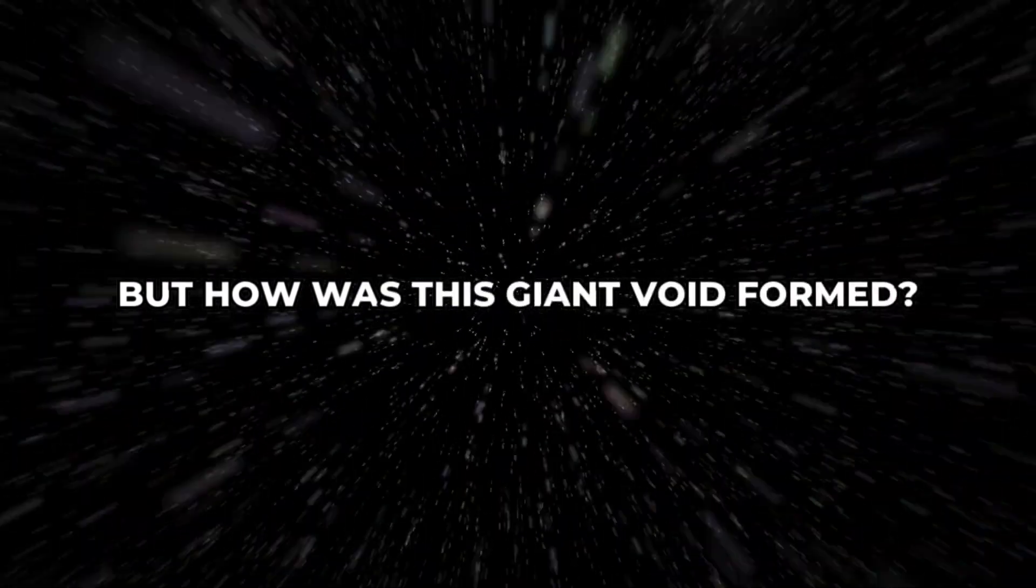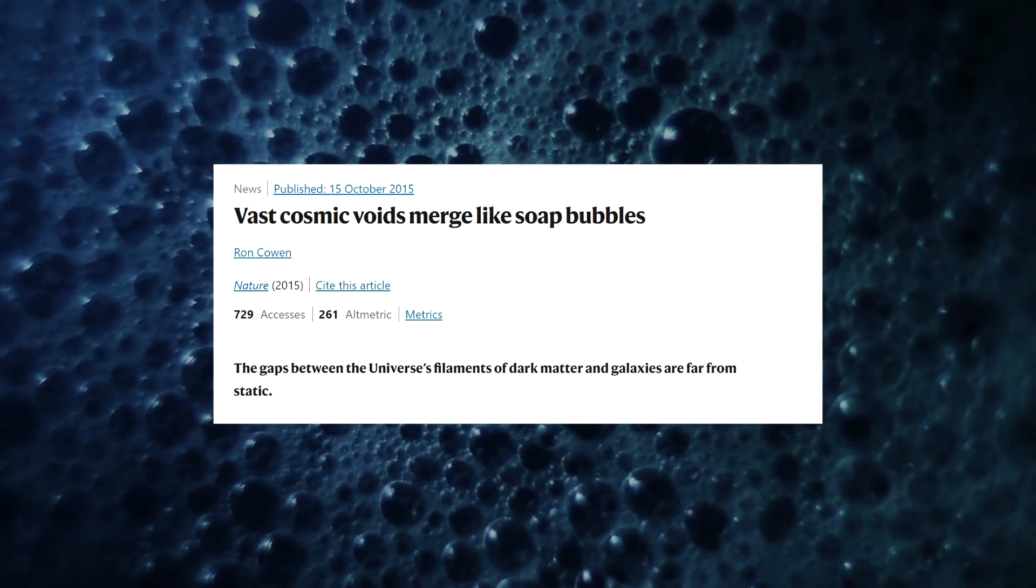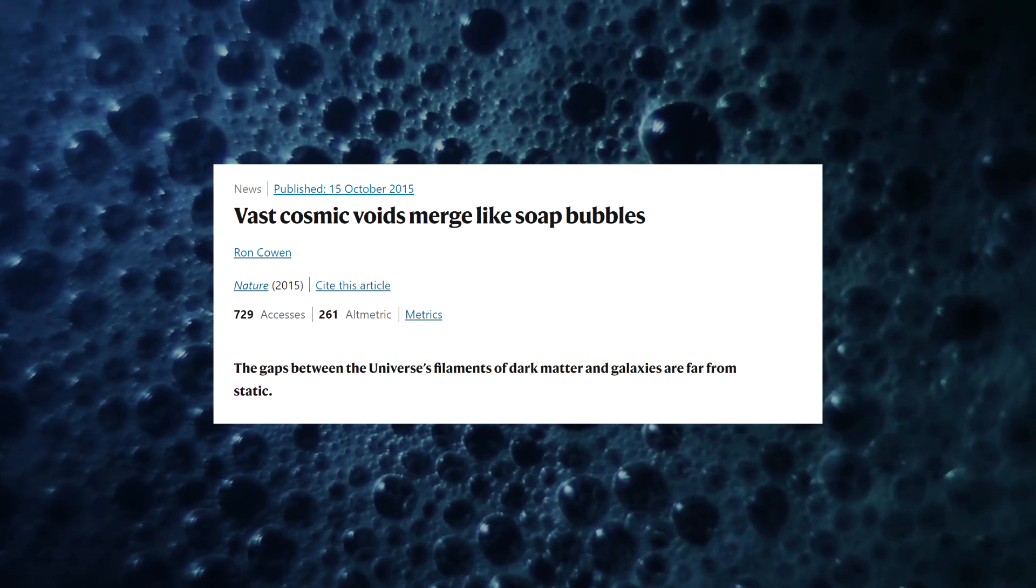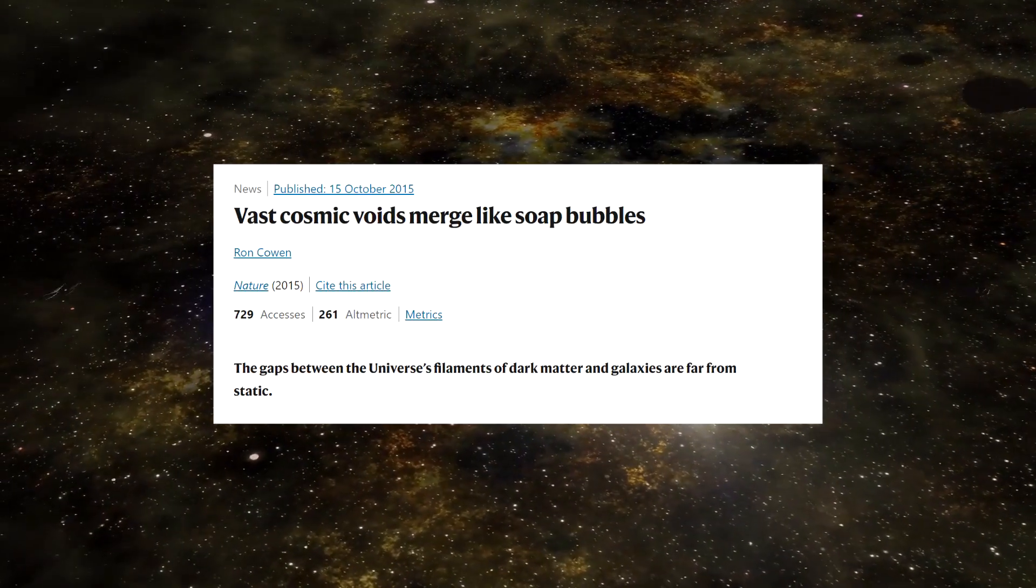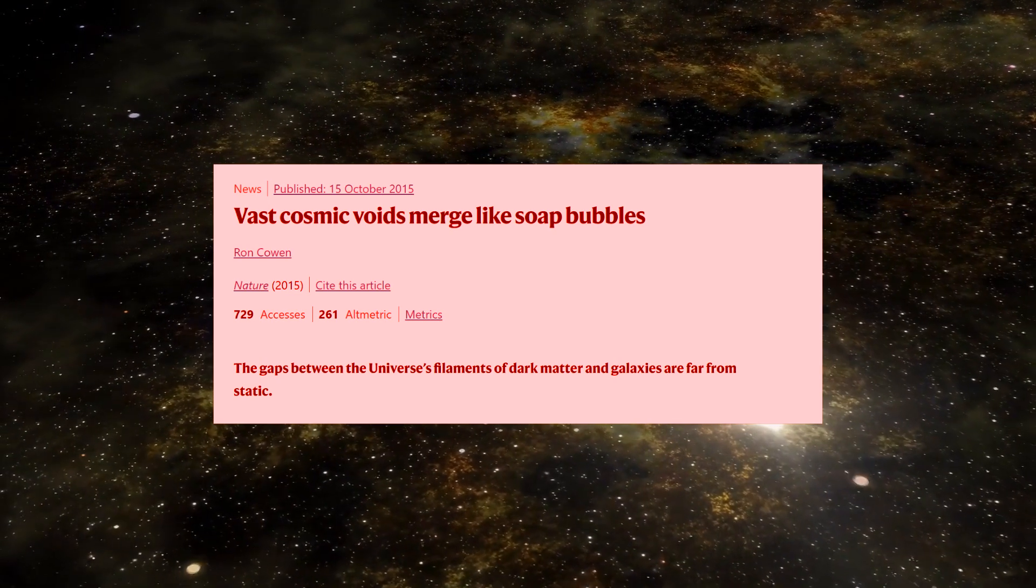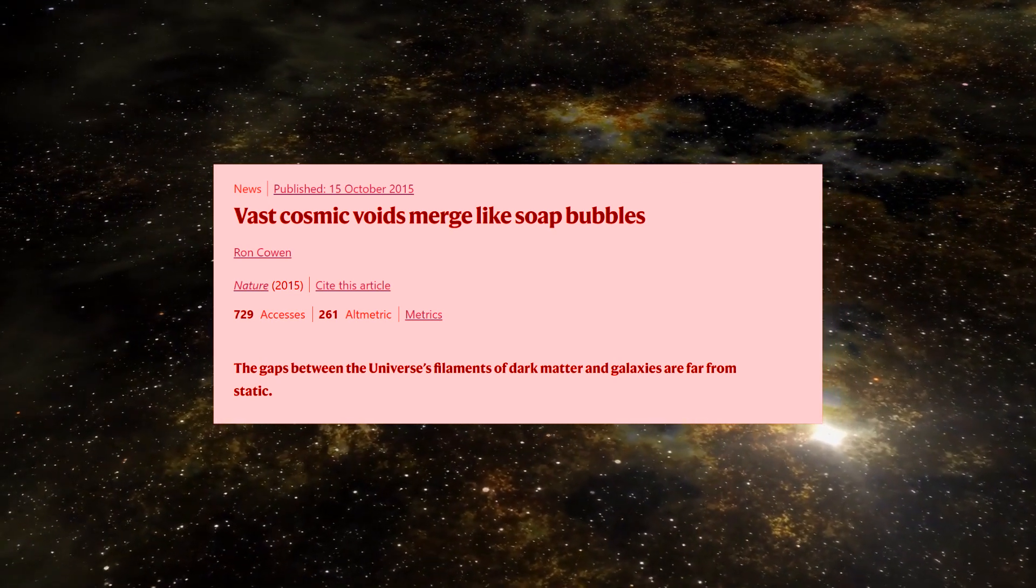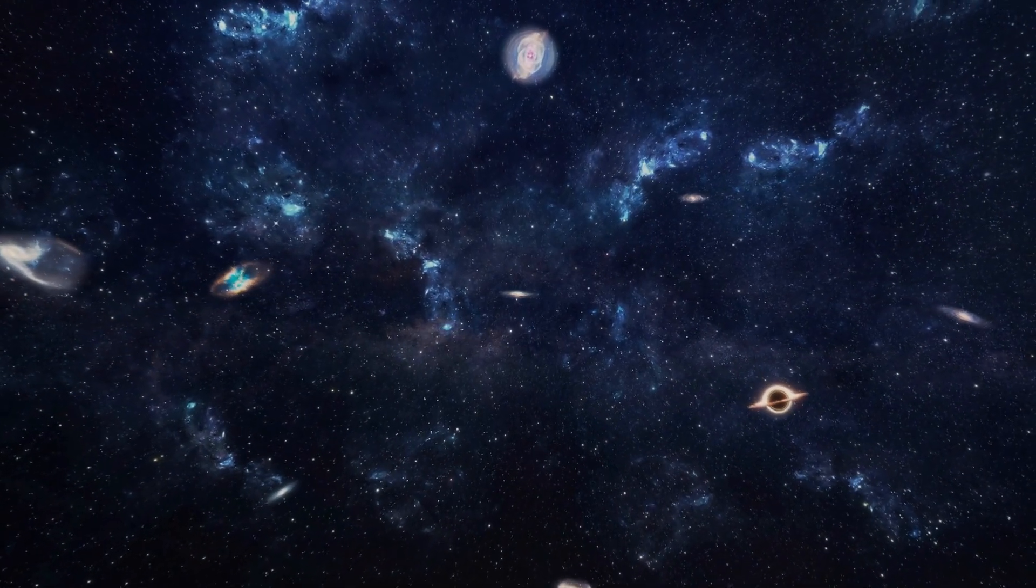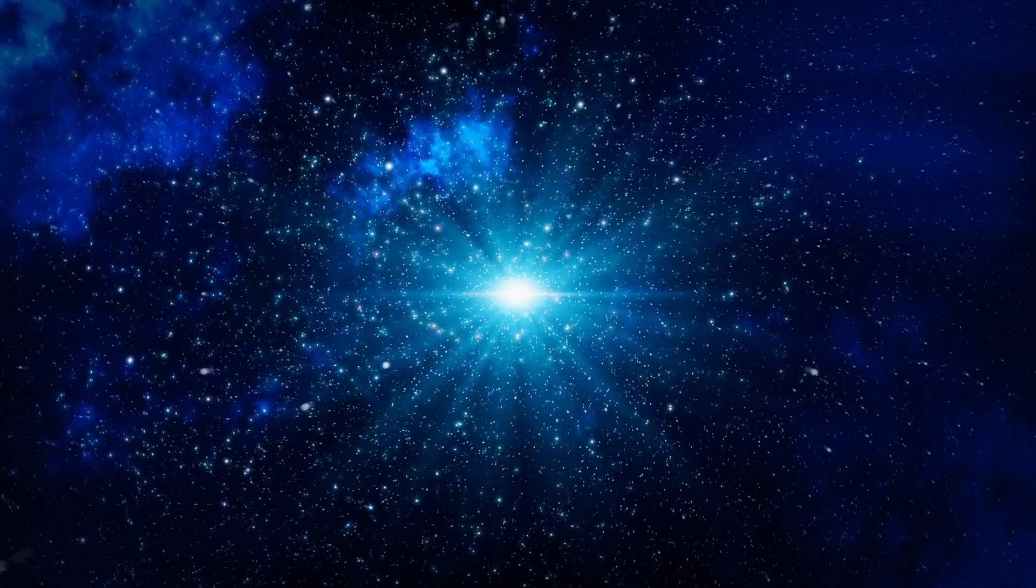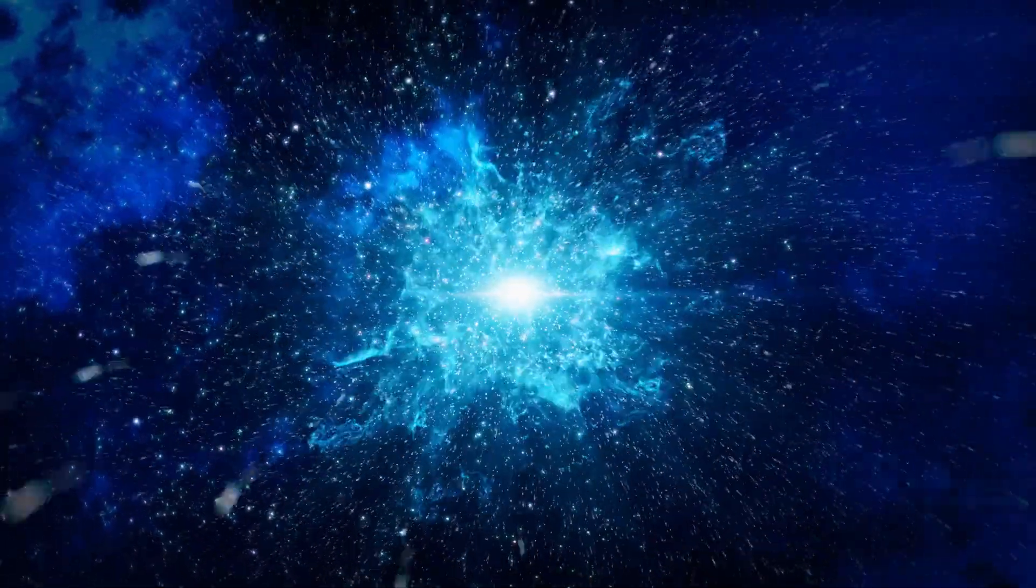But how was this giant void formed? According to scientists, Boötes came into existence when smaller voids merged gradually over time. This merging process led to the formation of the larger Boötes void. However, not all scientists are on the same page. Some argue against the idea that Boötes void became so expansive through the merging of smaller voids. They believe that since the Big Bang, there hasn't been enough time for a void of this immense size to develop. In both cases, the cause that led to this giant void traces back to the beginning of the universe.